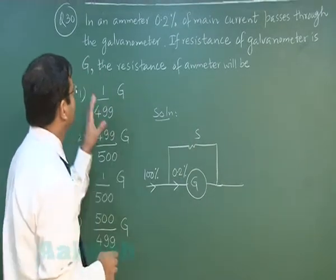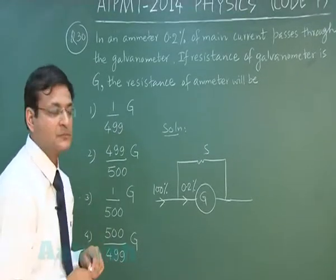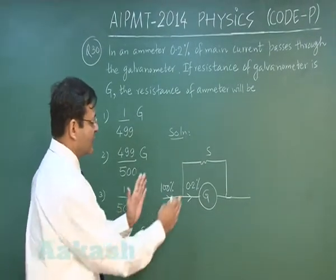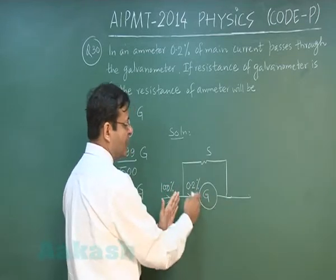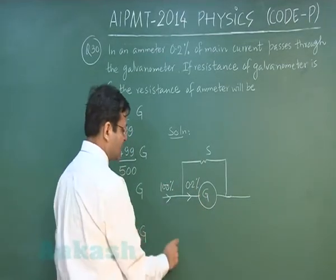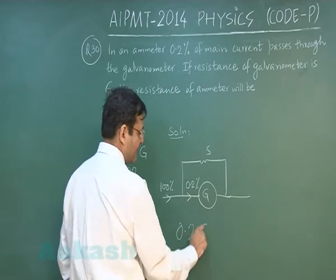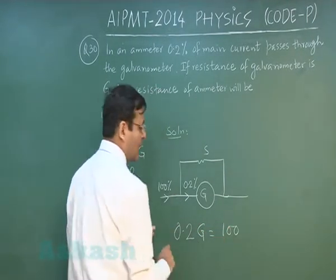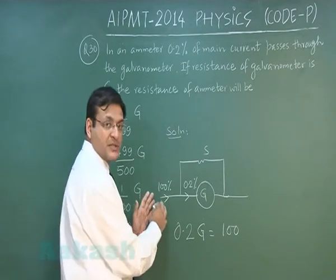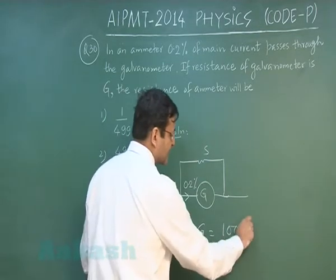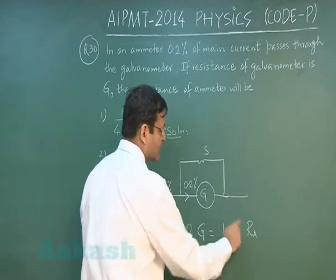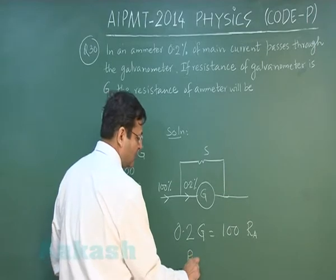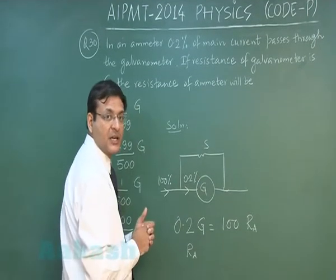And now this question is demanding what is the resistance of the ammeter. Whatever is the potential drop here, 0.2 into G, that will be equal to 100 percent of the current passing through the resistance of the ammeter, which you are supposed to calculate. So if you solve this thing, resistance of the ammeter - mind you they have not demanded resistance of the shunt.